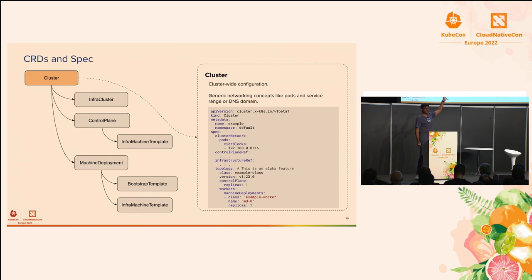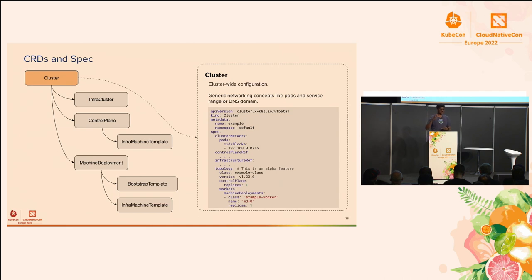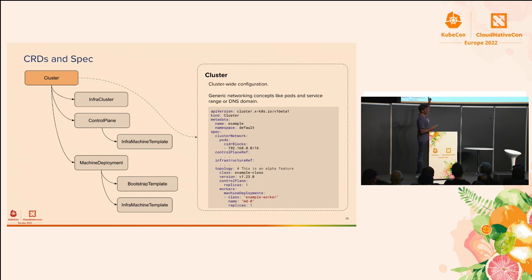We have a control plane provider responsible for initializing the control plane, bringing it up, and bootstrapping. We have a bootstrap provider responsible for bootstrapping worker nodes into the Kubernetes cluster. Looking at how the CRDs relate to each other: at the top left is the cluster definition, which is the root of the whole idea. It holds environment-agnostic specifications like pod and service CIDRs and DNS domains, and is responsible for maintaining the cluster's lifecycle. You may have noticed a topology section with a comment saying this is an alpha feature — we'll go into that in a bit.